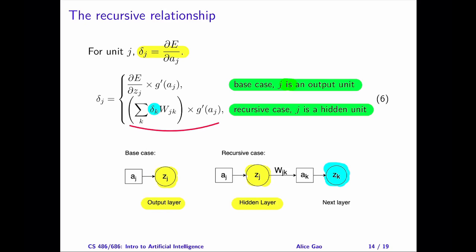That's everything for this video. Let me summarize. After watching this video, you should be able to do the following: describe the backpropagation algorithm, and given a multilayer feedforward neural network, calculate the gradients for each weight in the network. Thank you very much for watching. I will see you in the next video.